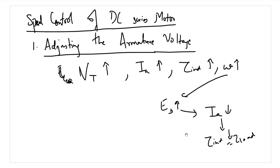These are the speed control methods of DC shunt motors and DC series motors. Now, there is one important problem with DC series motors. Since the field winding and armature winding are in series, the starting current in a DC series motor is very high.